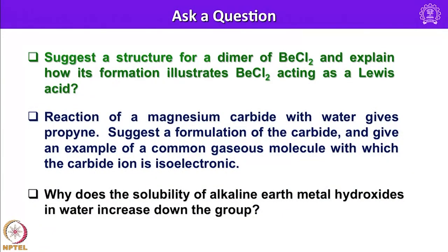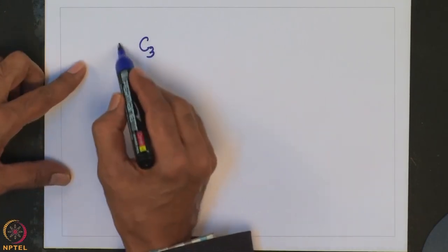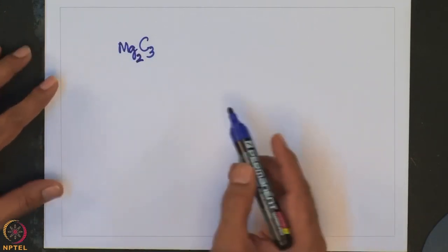Reaction of a magnesium carbide with water gives propyne. Suggest a formulation of the carbide and give an example of a common gaseous molecule with which the carbide ion is isoelectronic. The formation of propyne indicates that the carbide should have three carbon atoms. Balancing charge: if propyne C₃H₄ is formed, the carbide ion is C₃⁴⁻, and the formula is Mg₂C₃.